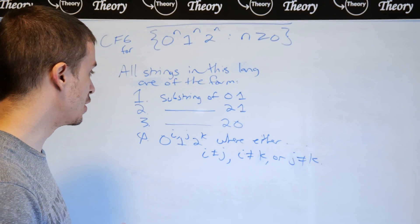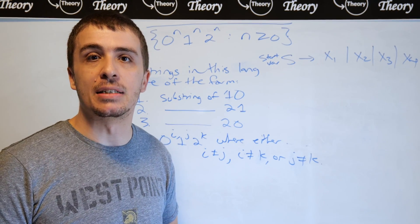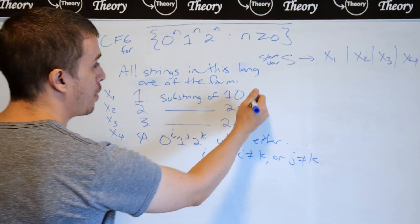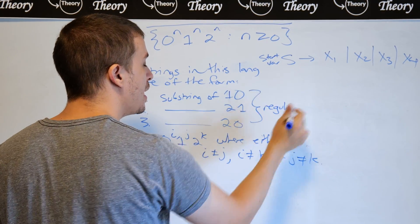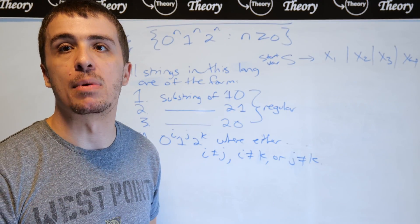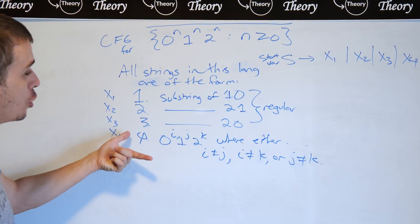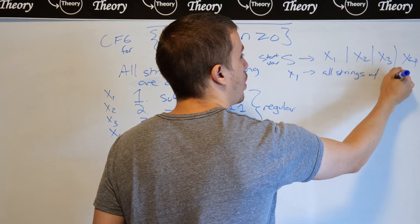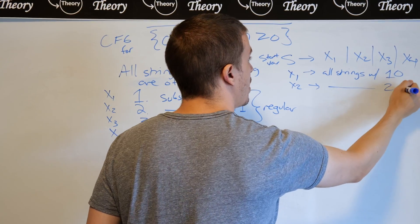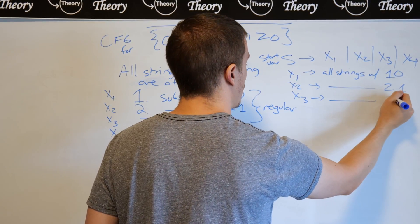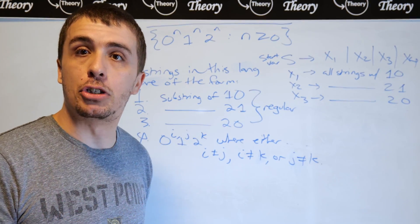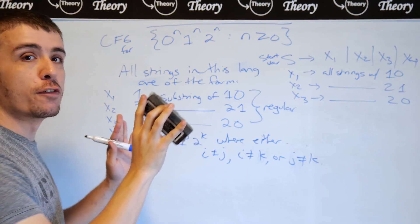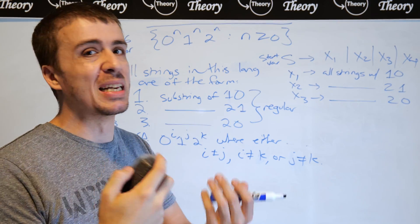The grammar is massive. All three wrong-order cases are regular, so you can make a DFA and therefore a CFG for each. I'll call those X1 (all strings with 1,0), X2 (all strings with 2,1), and X3 (all strings with 2,0). I'll focus on X4 — specifically one part of it — while the rest is very similar.